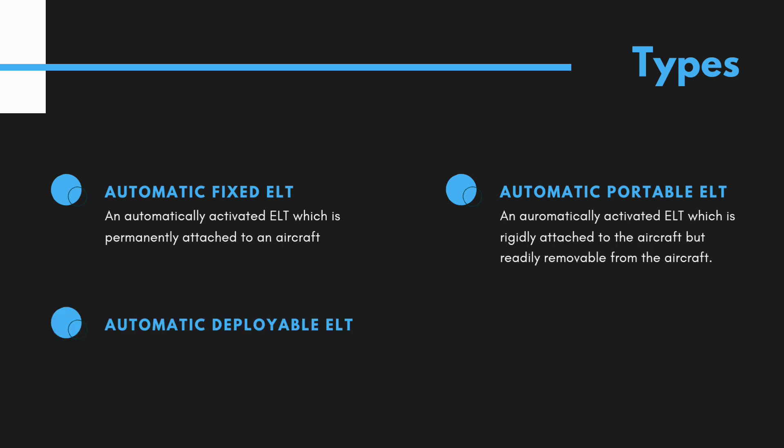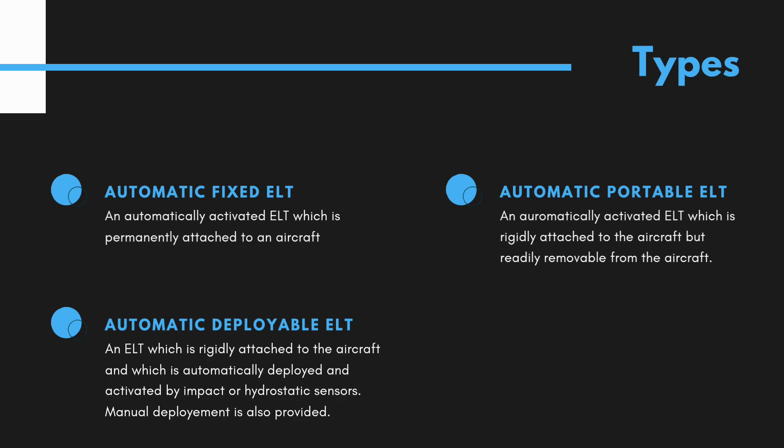Automatic Deployable ELT is an ELT which is rigidly attached to an aircraft and is automatically deployed and activated by impact, but in some cases it is also deployed by hydrostatic sensors. Manual deployment capability is also provided.